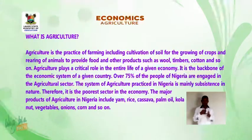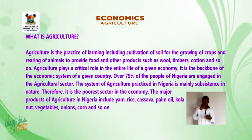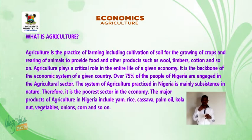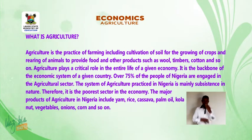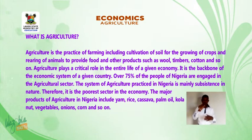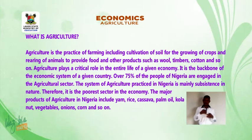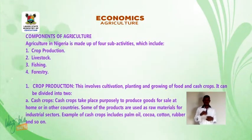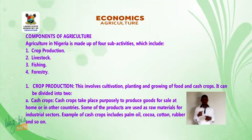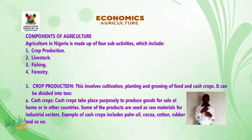Therefore, it is the poorest sector in the economy. The major products of agriculture in Nigeria include yam, rice, cassava, palm oil, kola nuts, vegetables, onions, corn, and so on. Components of agriculture: Agriculture in Nigeria is made up of four sub-activities which include: 1. Crop production, 2. Livestock, 3. Fishing, 4. Forestry.